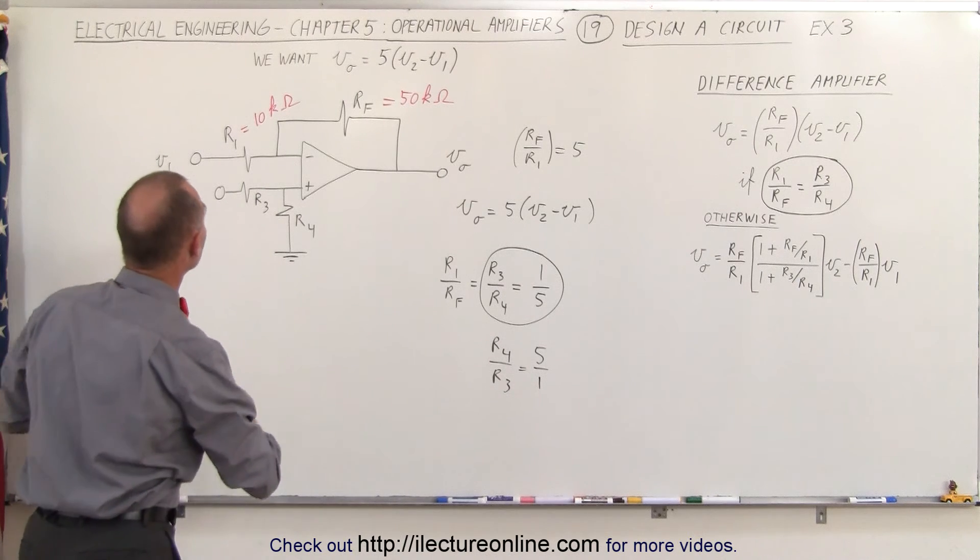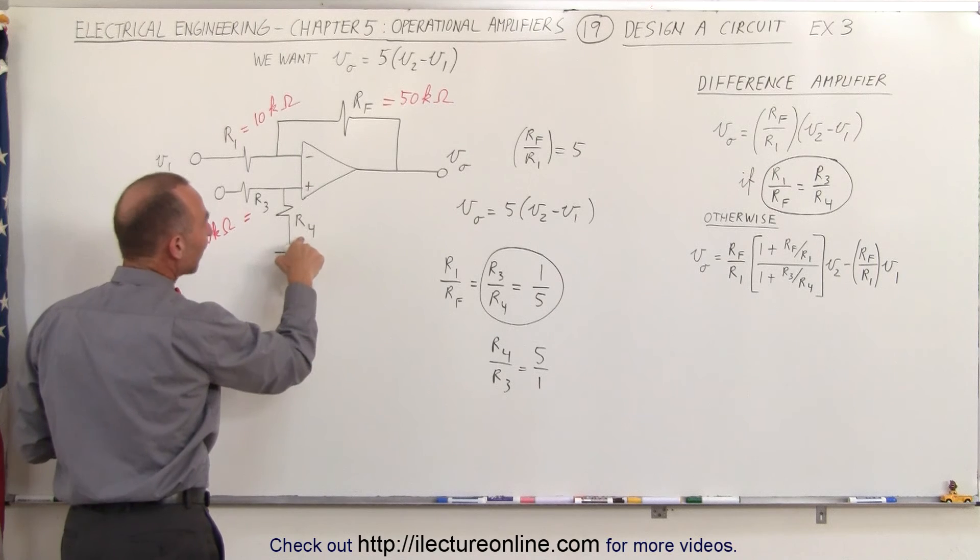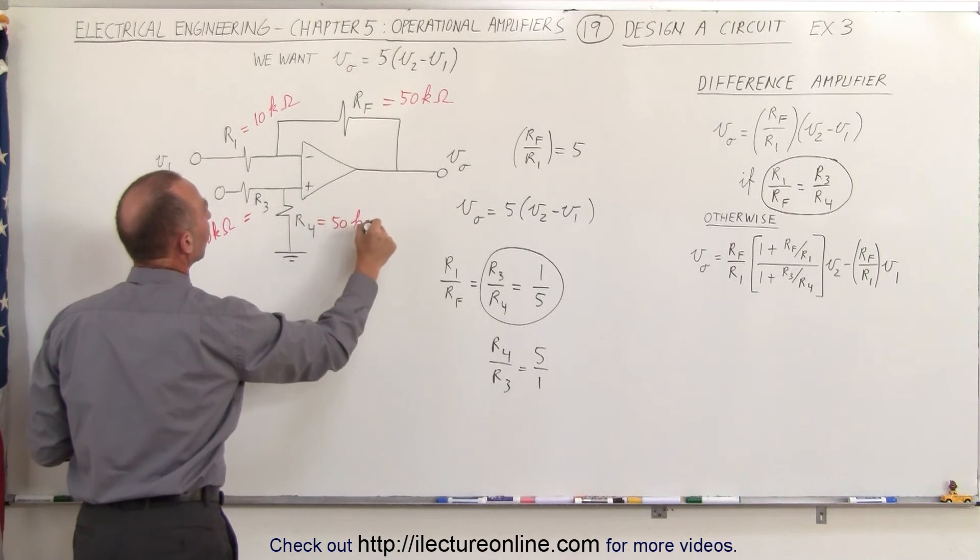Let's make R3 then equal to 10 kOhms, which means that R4 must be 5 times the amount, or 50 kOhms.